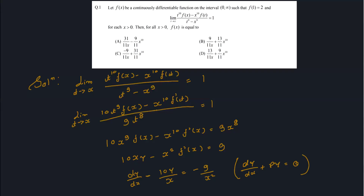JEE Advanced 2024 equation paper one: f is a continuously differentiable function in the open interval (0, ∞). f(1) = 2, and the limit as t tends to x of [t^10 · f(x) − x^10 · f(t)] / [t^9 − x^9] equals 1 divided by f(x). We need to find f(x).